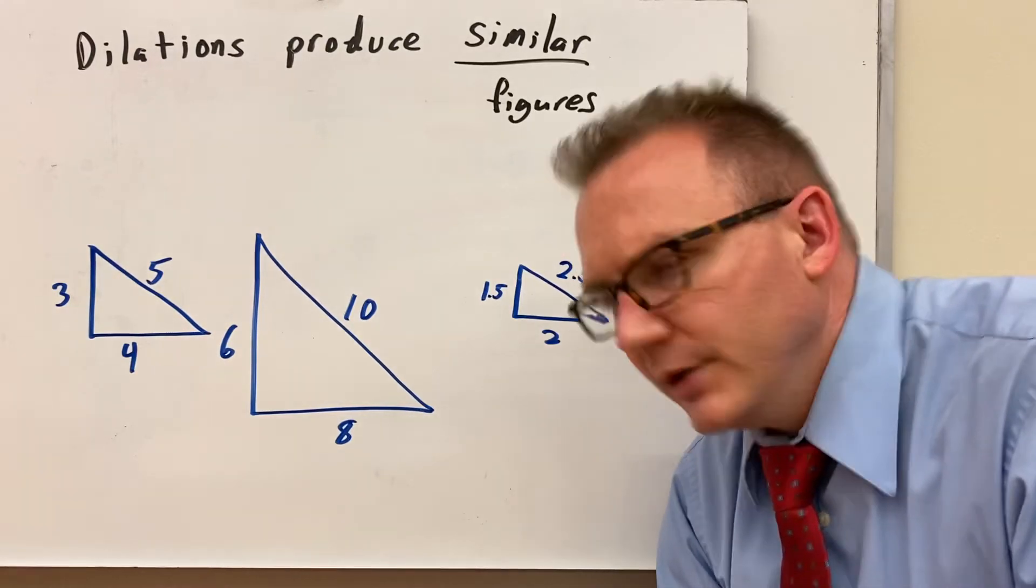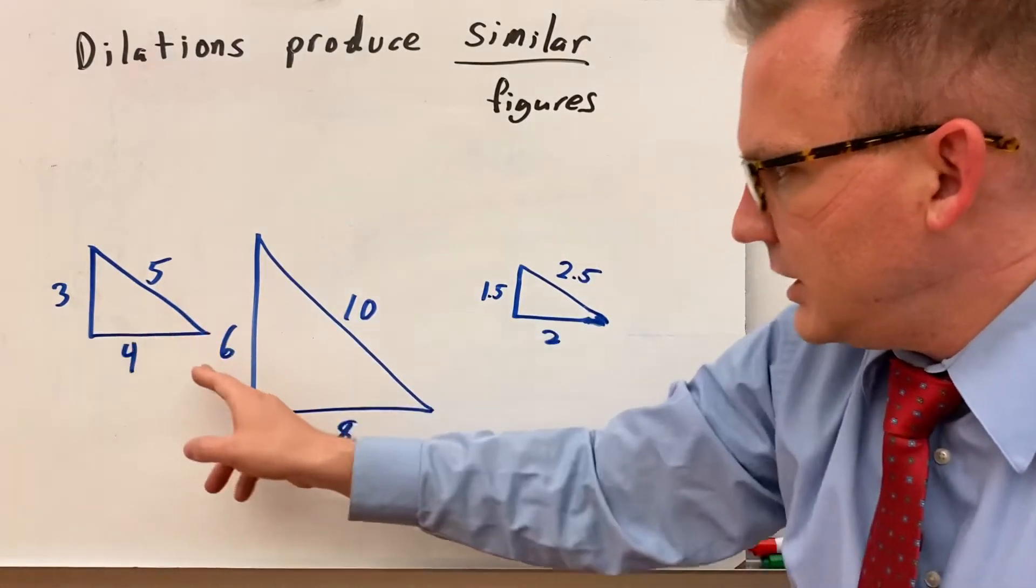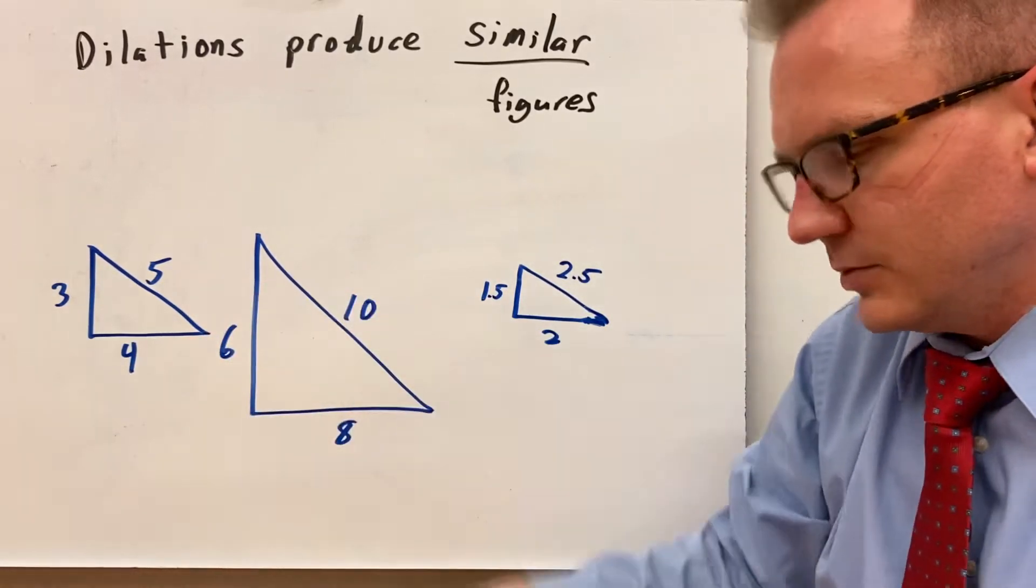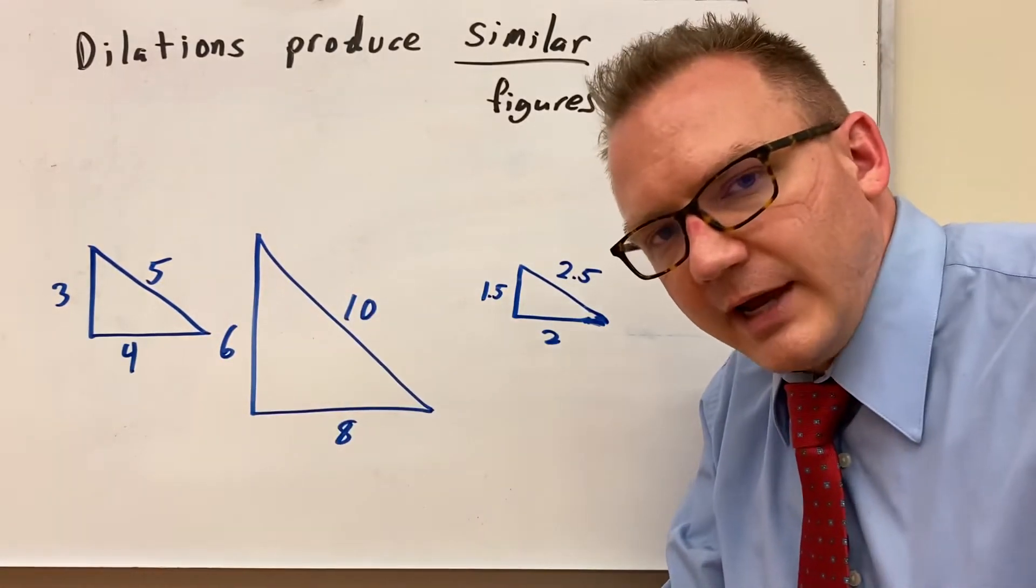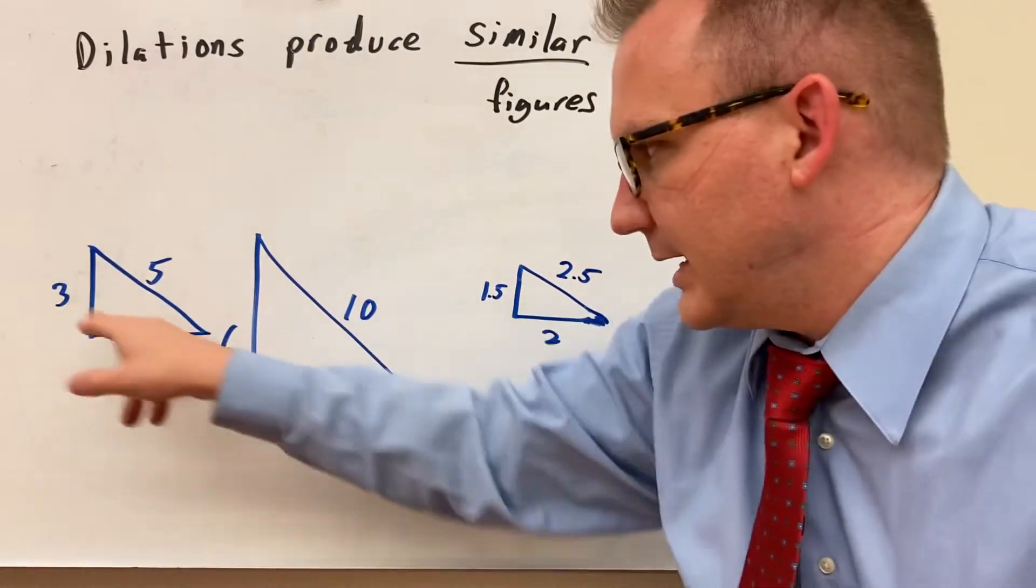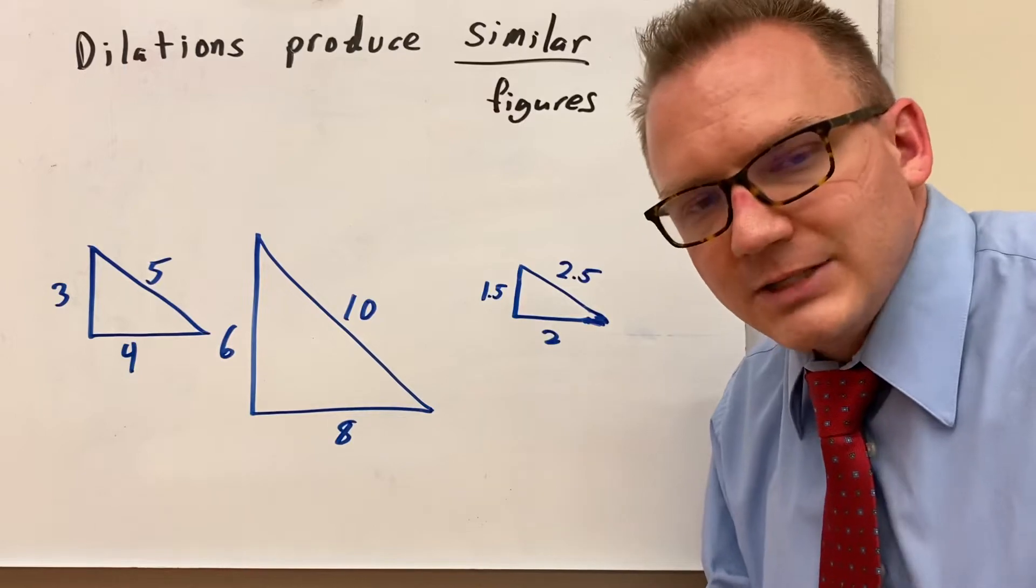But they're very similar in that the 3 goes to the 6, it's times 2, 4 times 2 is 8, and 5 times 2 is 10. You have the same scale factor or there's a ratio between the sides, the corresponding sides within each shape and it's called similar.